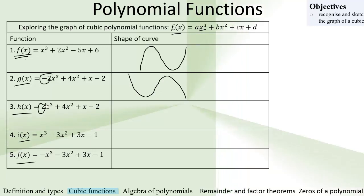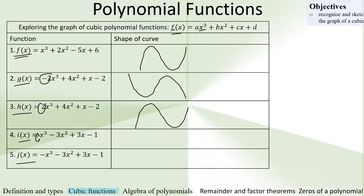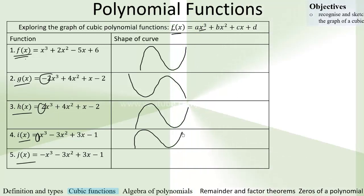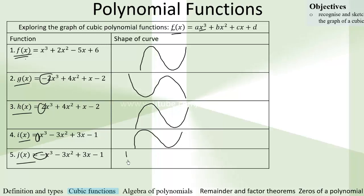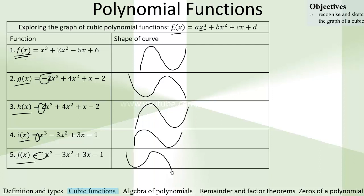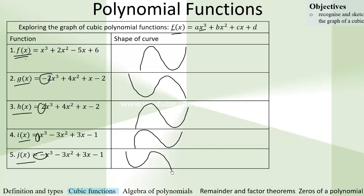So this one is positive, so it will also start from below and go like this. This is also a positive one, so it will start like that and go like that. And if you look at this one, it's negative, so it will start from above, go up, then come down. That is how the shape in general of the cubic polynomial functions are, given the value of a — if a is less than zero, and if a is greater than zero.